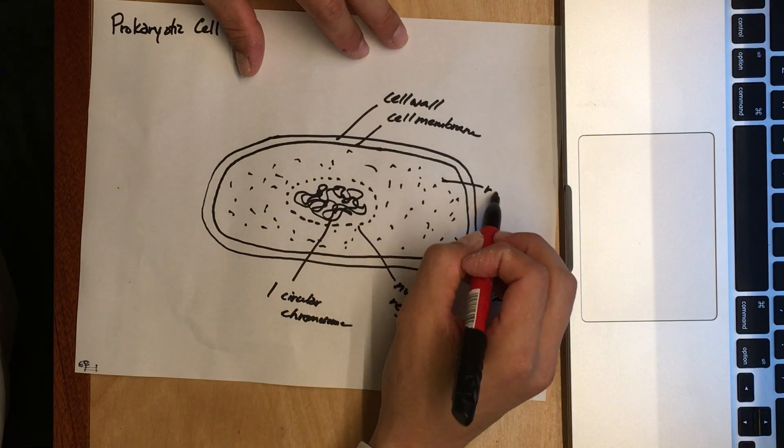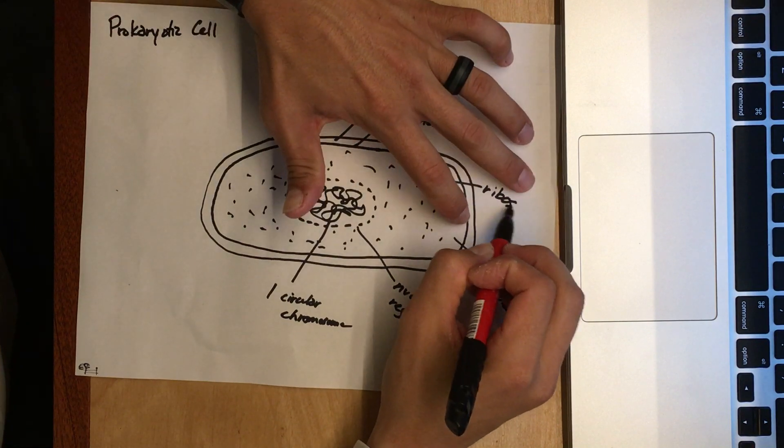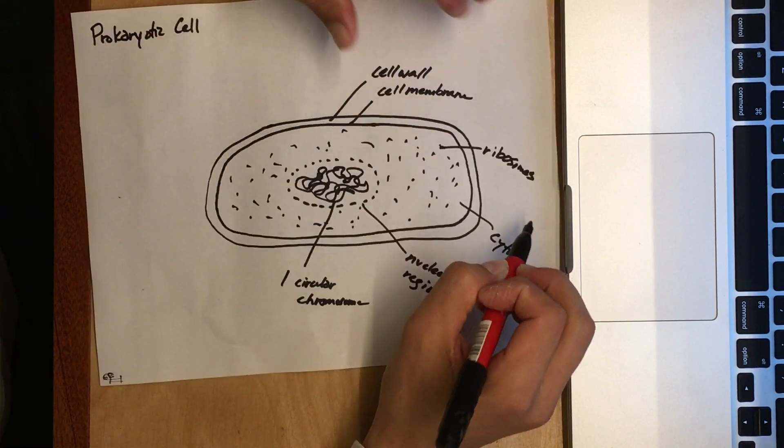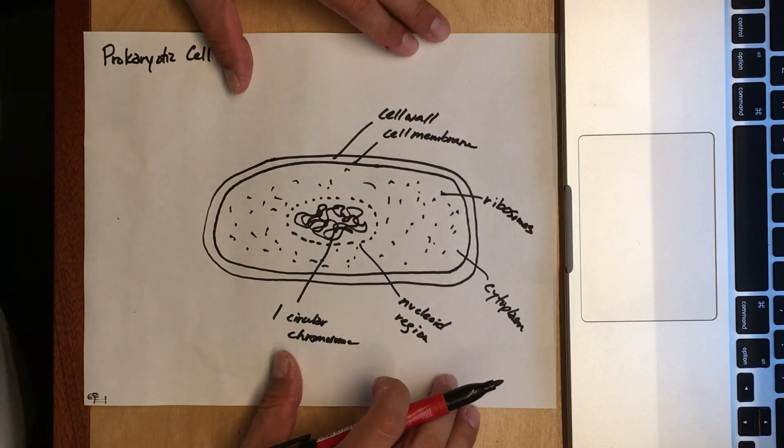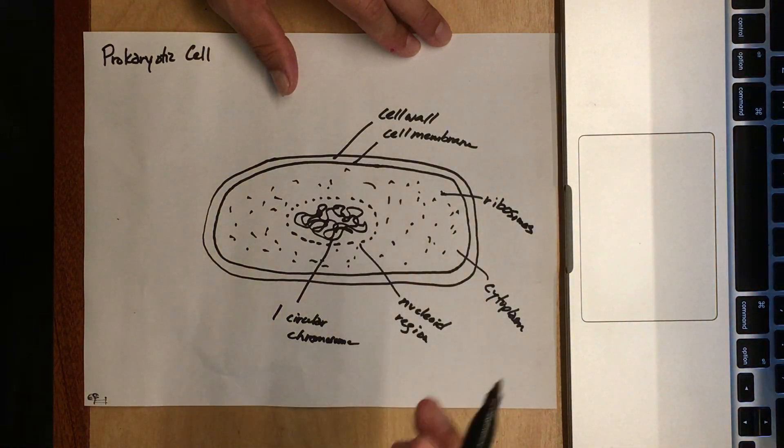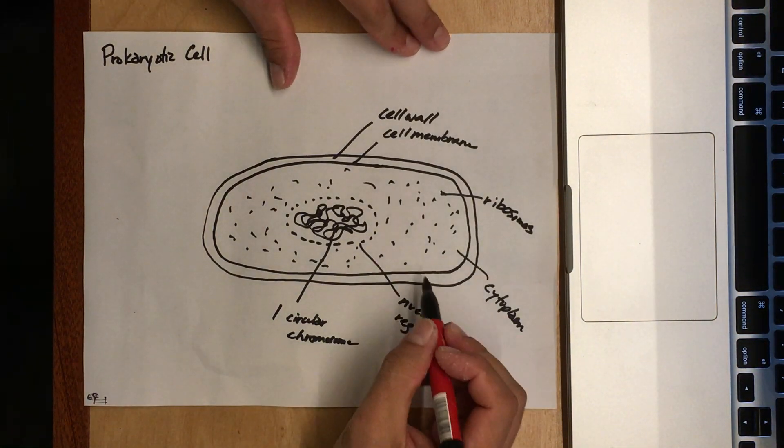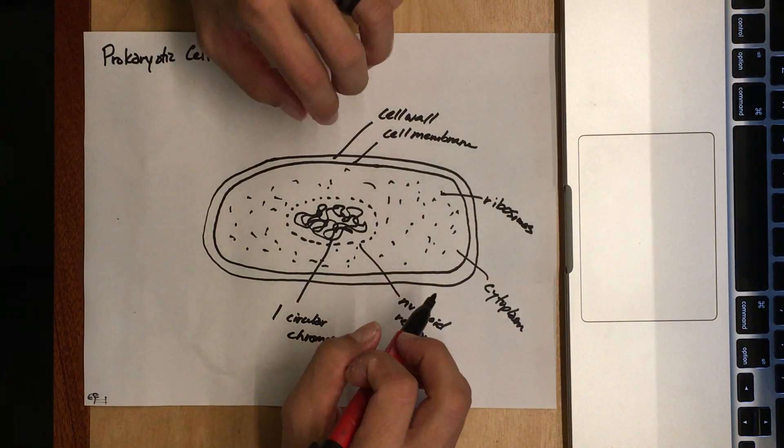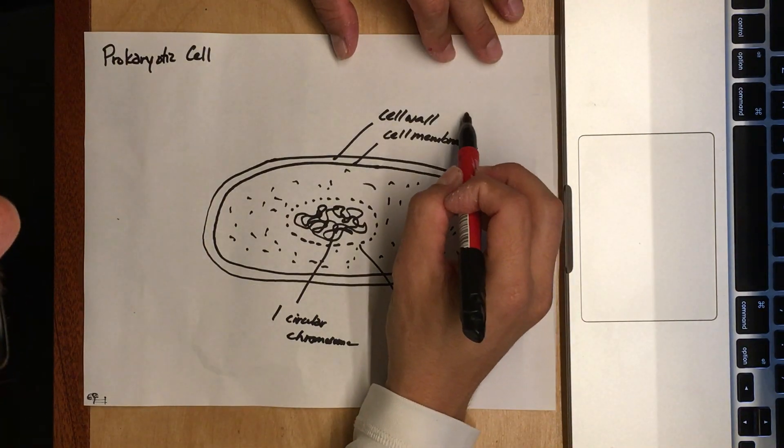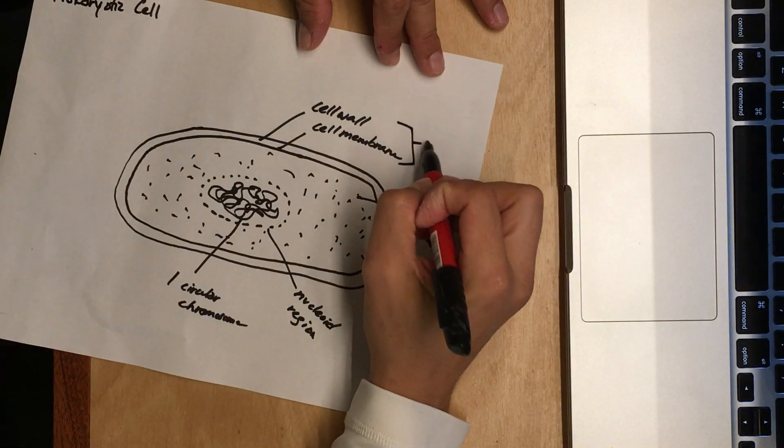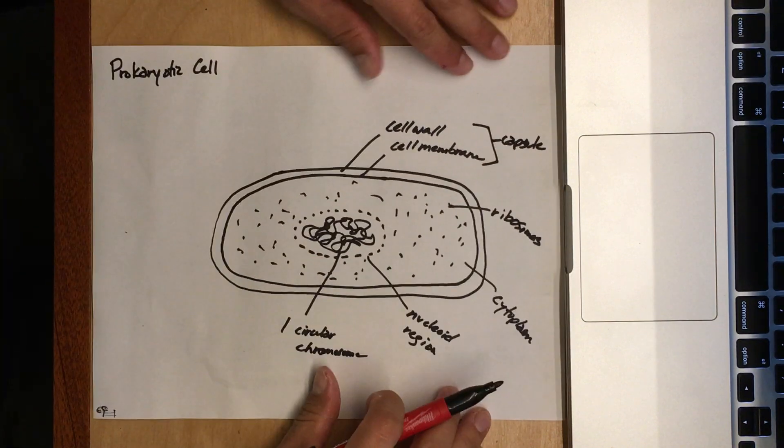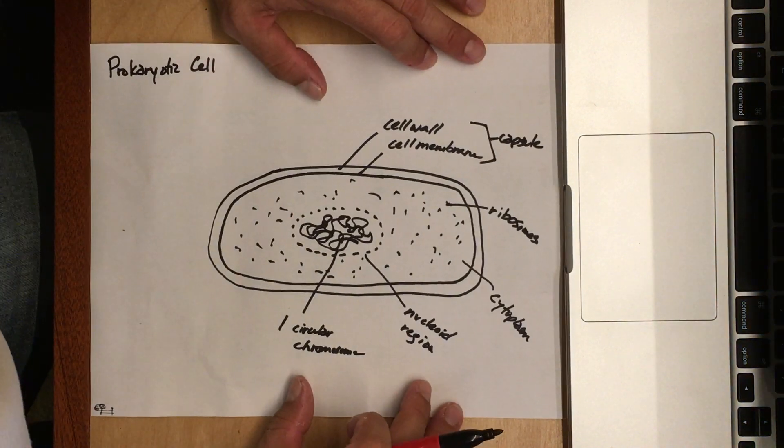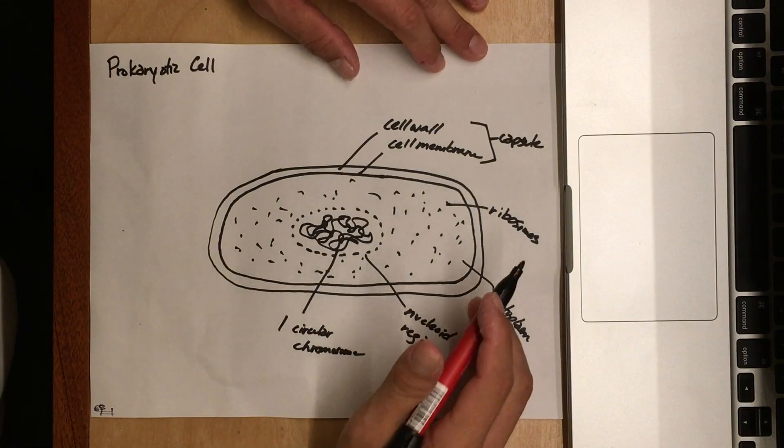These are ribosomes. There are ribosomes all over the place inside the cytoplasm, so I just picked one and labeled it. Because we have such a thick exterior that protects this cell, these two things together are often called the capsule.